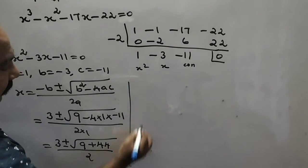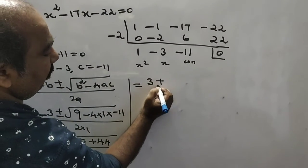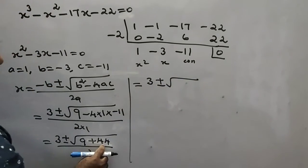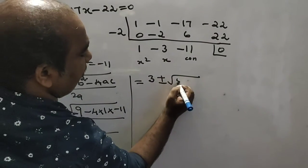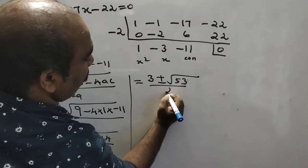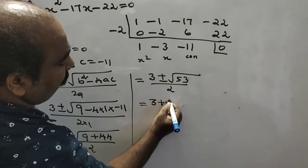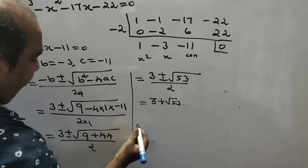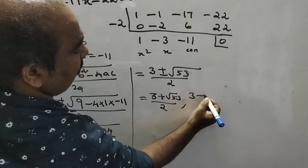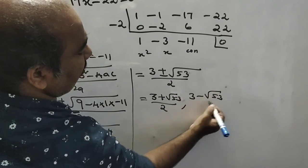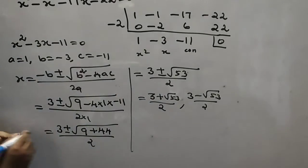Substituting: x equals 3 plus or minus root of 9 plus 44, divided by 2, which gives x equals 3 plus or minus root of 53, divided by 2. So the other two roots are x equals (3 plus root 53) divided by 2, and x equals (3 minus root 53) divided by 2. Thank you so much.